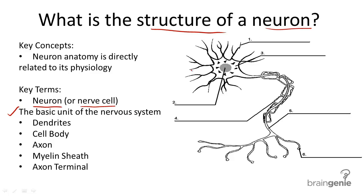Most neurons have generally the same parts, though some look sort of different than this picture. They are comprised of dendrites, a cell body, an axon, some have a myelin sheath, and axon terminals.